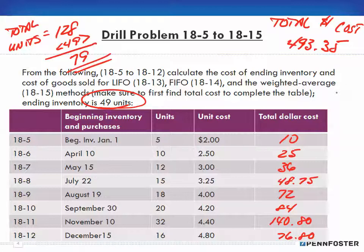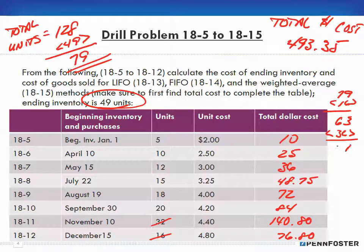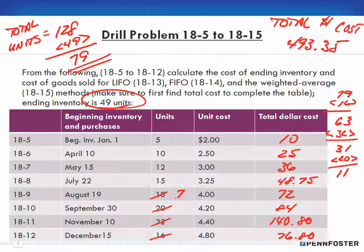With LIFO — last in, first out — we take the last units out first. Starting with 79 units to remove: take out 16 from December, leaving 63; take out 32 from November 10th, leaving 31; take out 20 from September 20th, leaving 11; then take out 11 from the August 18th entry, leaving 7 remaining from that row.